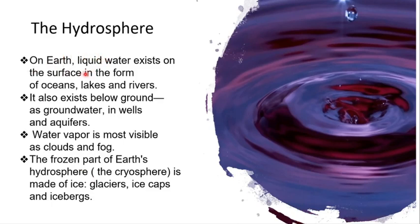On earth, liquid water exists in the form of oceans, lakes and rivers. It also exists below the ground as groundwater in wells and aquifers. Water vapors are visible as clouds and fog, and the frozen part of earth's hydrosphere is made of ice, glaciers, ice caps and icebergs, which is also called cryosphere.